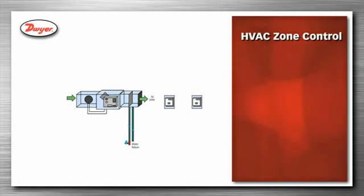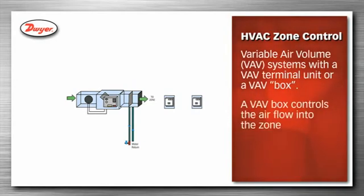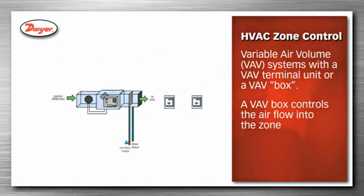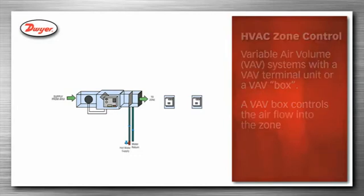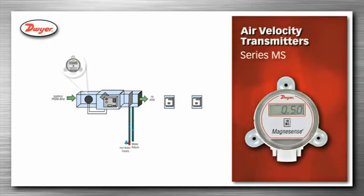Buildings are often broken down into zones for better control of the HVAC system. These zones can have variable air volume, VAV systems, with a VAV terminal unit or a VAV box. A VAV box controls the air flow into the zone, thereby controlling the environment of the zone. Dwyer offers several products used in zone control. Damper actuators, series DD, are used to control the amount of air added to the zone by opening and closing the air duct via a damper. An air velocity transmitter, series MS differential pressure transmitter, is used to monitor the duct air flow. The series MS has square root extraction for direct air velocity indication.